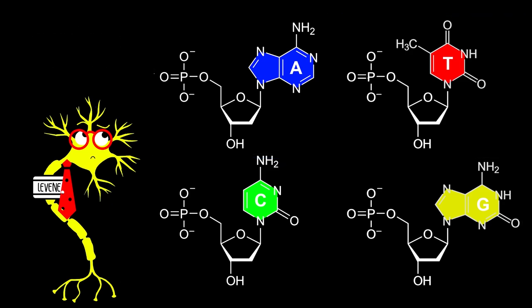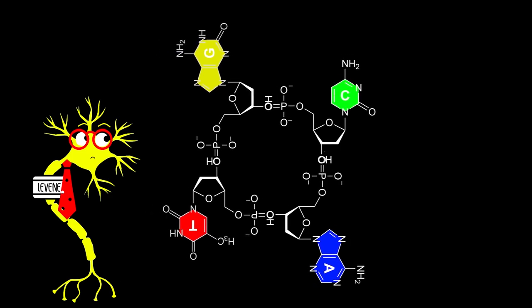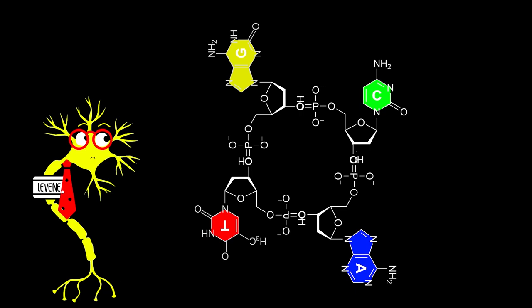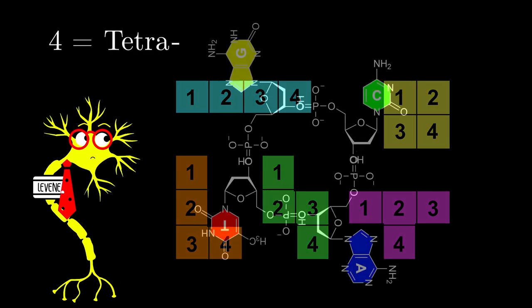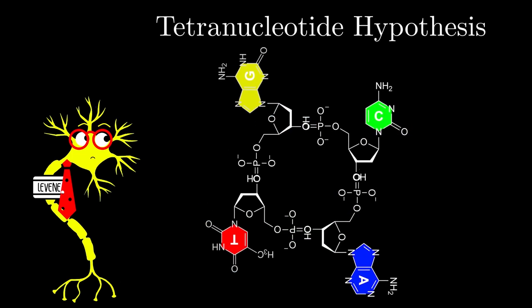So the next step was to figure out, how do these nucleotides join together to build the larger DNA molecule? Well, Levine had a guess. He reasoned that, hey, maybe they just combine like this, with one of each type of nucleotide. And Levine loved this idea so much, he gave it a name. Four in Greek is tetra, kind of like tetris. So Levine called this idea his tetranucleotide hypothesis. And in fact, for over 20 years, people believed Levine that this is what DNA looked like.